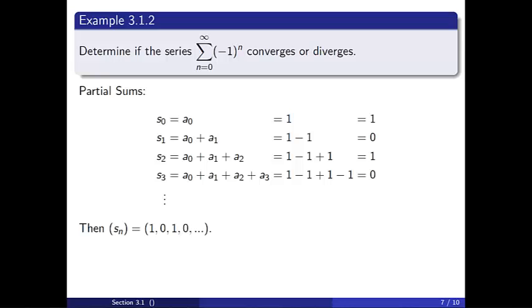we see the pattern and recognize the partial sums as the sequence 1, 0, 1, 0, etc. Since the sequence of partial sums diverges, we know the series (-1)^n diverges as well.